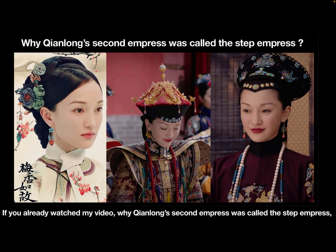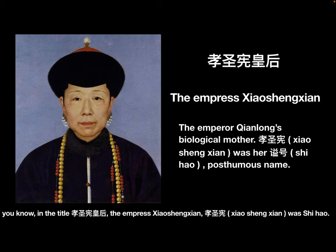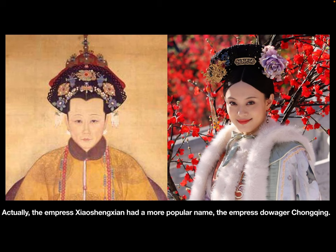If you already watched my video on why Qianlong's second Empress was called the step-empress, you will know that in the title Xiao Shengxian Huanghou, the Empress Xiao Shengxian had a more popular name: the Empress Daozhe Chongqing.